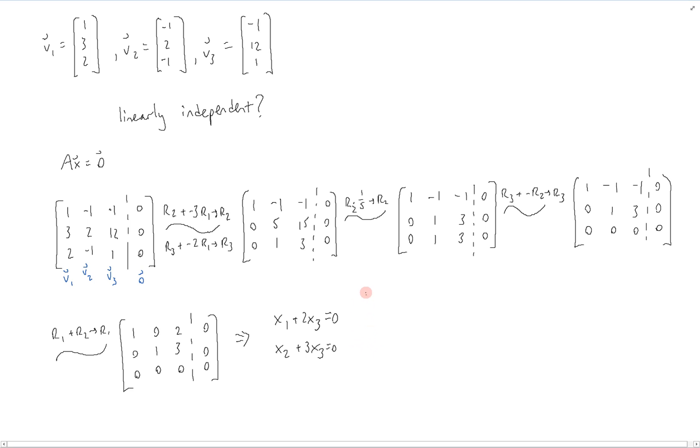Suppose we let x3 equal 1, then we get that x is equal to negative 2, negative 3, 1. This is a non-trivial solution, and therefore these 3 vectors are dependent.